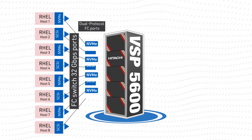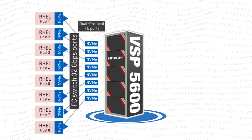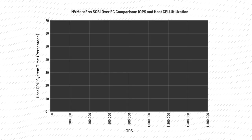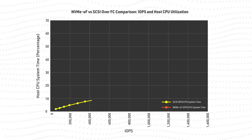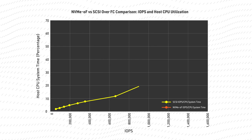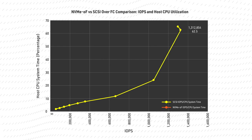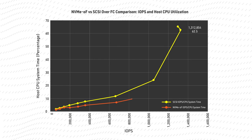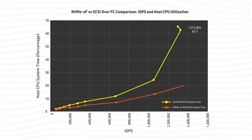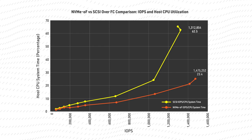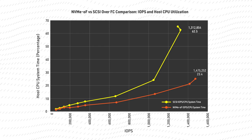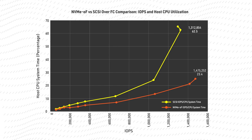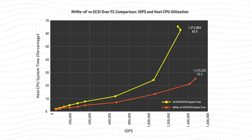Let's look at what our testing revealed about the advantages of NVMe over fiber channel. First, there was a significant difference in host CPU utilization. In the SCSI over fiber channel test, system CPU time on the host reached 62.5% at peak IOPS of 1.31 million. In the NVMe over fiber channel test, we achieved 1.48 million IOPS with a host system time of 23.4%. In summary, with the access protocol being the only difference between configurations, we achieved 13% more IOPS with 63% lower CPU system time.